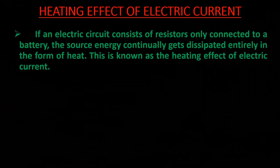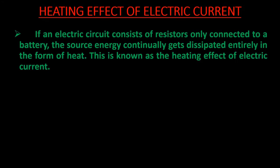If an electric circuit consists of resistors only connected to a battery, the source energy continuously gets dissipated entirely in the form of heat. This is known as the heating effect of electric current.